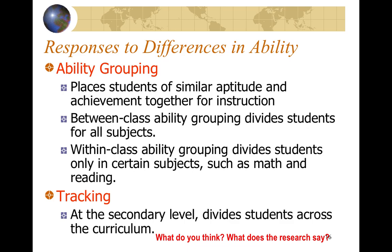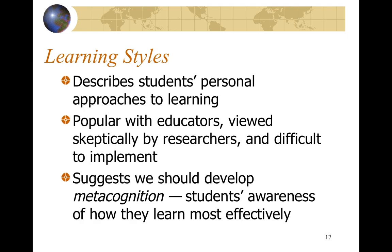How do we respond to differences in abilities? One way is ability grouping — grouping by intelligence type or by subject strength. For example, if Johnny is good at math, Sally at reading, and Sue at naturalistic interpretation, that's a great group because they bring different skills. At the secondary level, we track students across curriculum through GT, AP, and pre-AP classes grouped by academic intelligence.